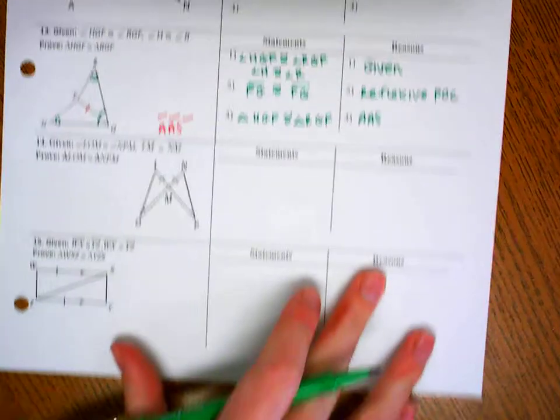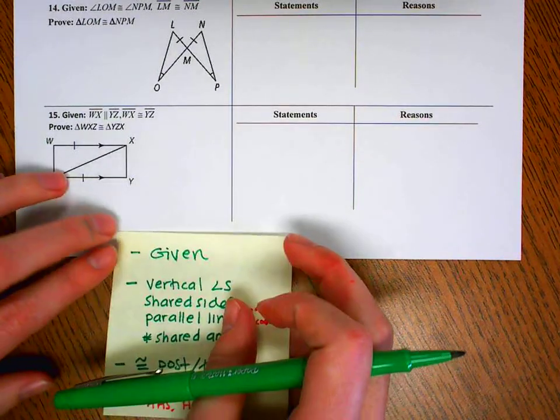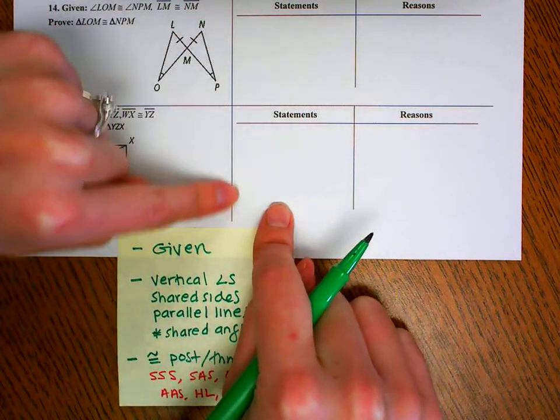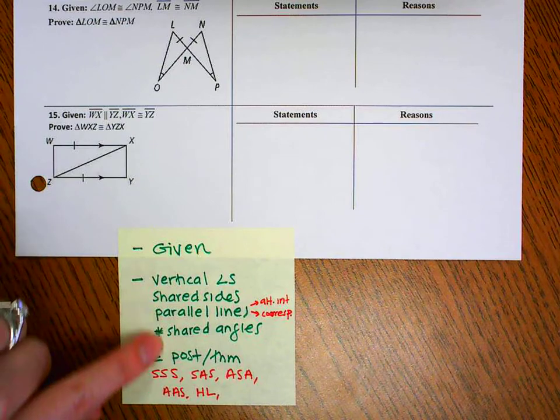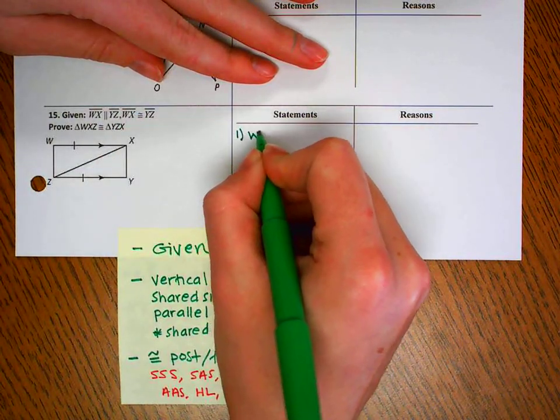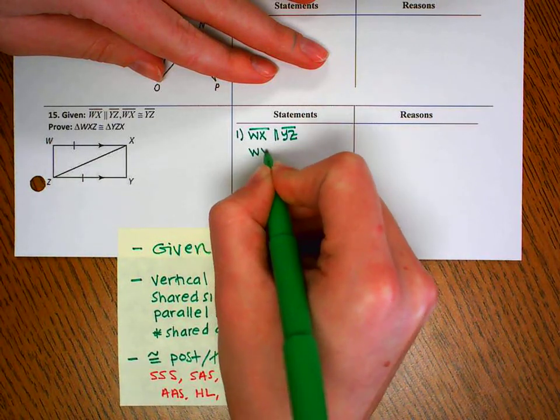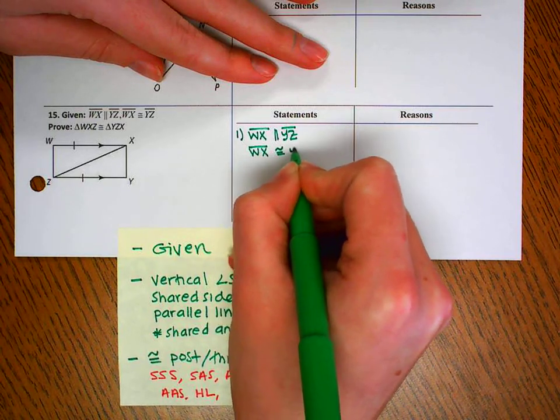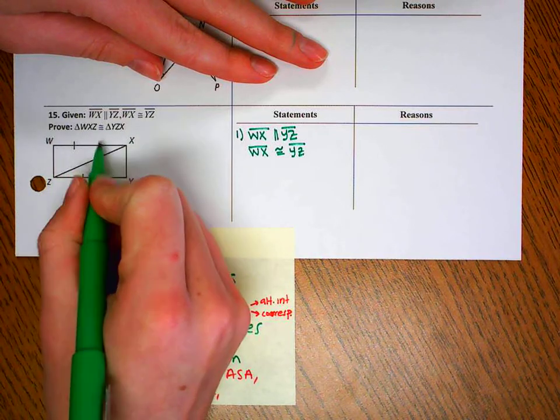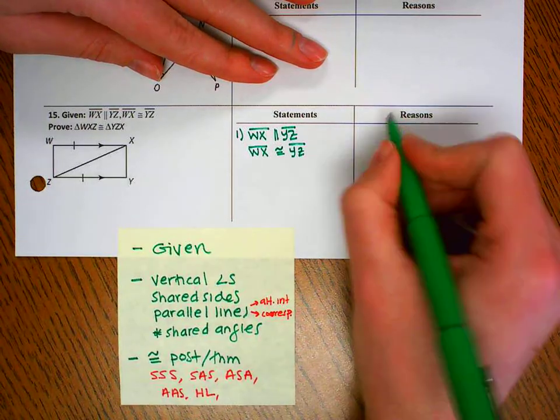Okay, on to 15. Now we no longer have the steps shown out for you. So you need to figure by yourself how many steps there are. But if we just go through this process, we'll be just fine. So we always start by copying out our given. And I have two pieces of given information. And I like to make sure it's in my drawing. So WX is parallel to YZ. Good. Segment WX is congruent to segment YZ. That's in my picture too. We're good.